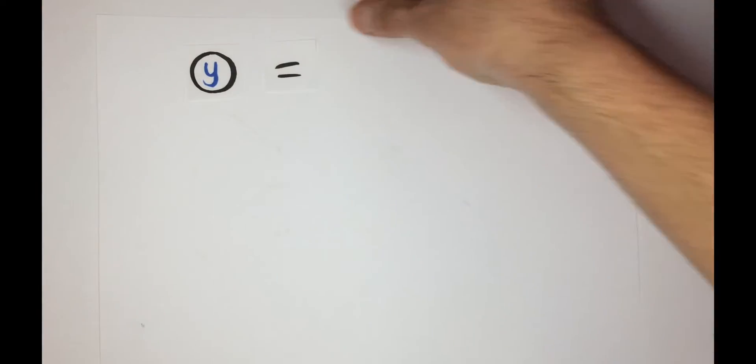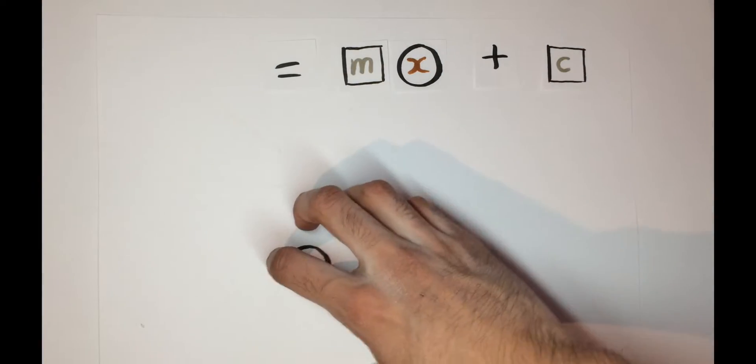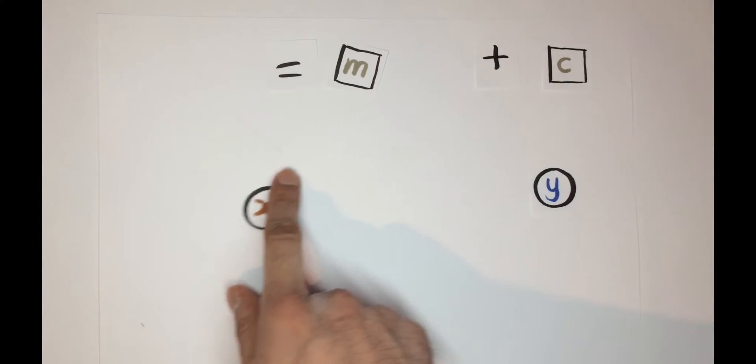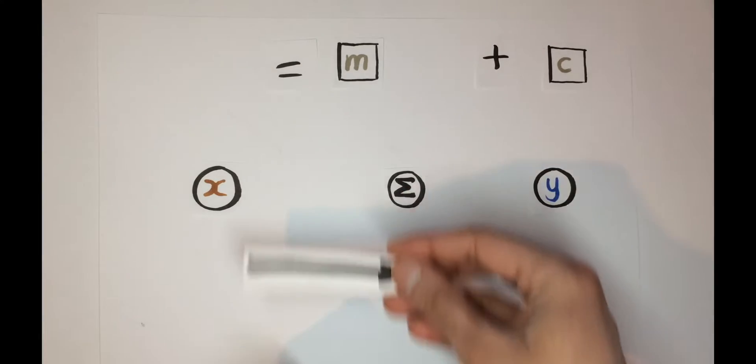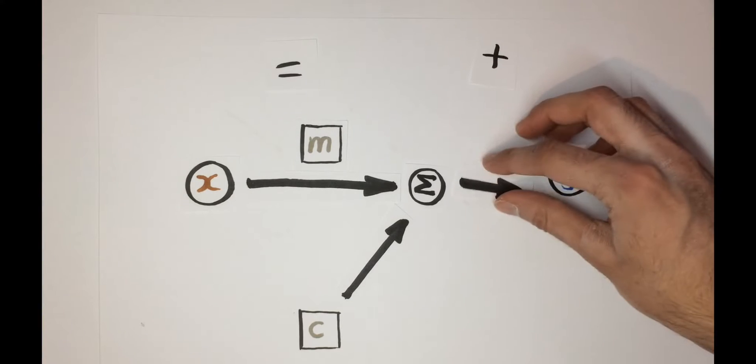We first need to figure out our inputs and outputs from our linear equation. So we are trying to predict one output y from one input x. So starting with x, we multiply it by a weighting factor m and then add an offset c. Now that we have defined our network,